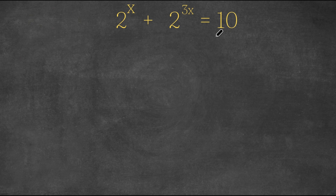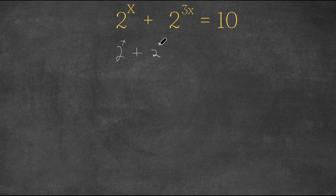What we're going to do first is rewrite this equation. We're going to write this as 2 to the power of x plus 2 to the power of x to the power of 3. Because remember, when we have something like this, this is equal to x times 3 — we multiply the exponents, so we're simply reversing that. And this equals 10.